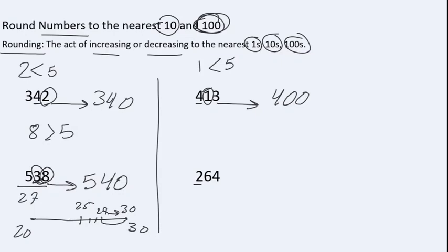For the next example, two hundred sixty-four, again we underline the digit in the hundreds place, which is two, and compare the digit in the tens place with five. Six is more than five. When it is more than five, we round up. When we round up, we increase the underlined digit — in this case two in the hundreds place — by one, so it becomes three. In the tens and ones places, we write zeros.